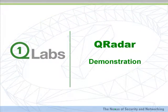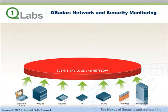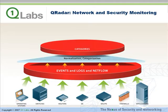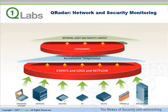QRadar is a network security management solution that goes above and beyond traditional SIM, log management, and network behavior analysis solutions. QRadar collects the broadest set of surveillance data from security devices, applications and operating systems, as well as live network behavior information from sources like NetFlow. QRadar processes and categorizes this data using security event correlation and network behavior analysis techniques to ultimately arrive at a reduced set of information for network and security operators to act upon.